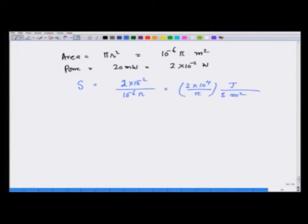That is S. S is equal to u times c, where u is the energy density. And therefore, u is equal to S over c, which is equal to 2 times 10^4 over pi times 3 times 10^8, which is 2 over 3 pi times 10^-6 joules per meter cubed.